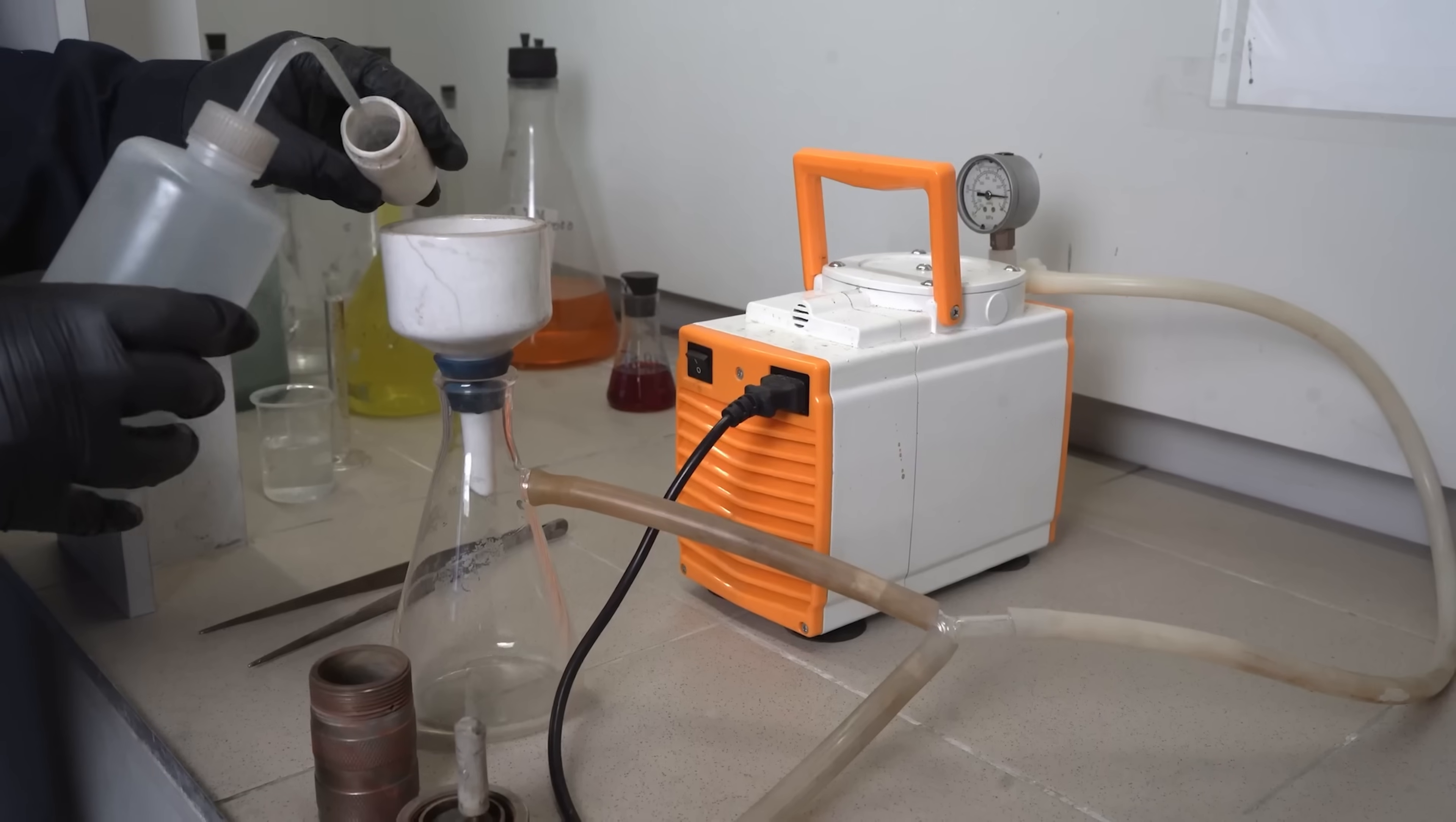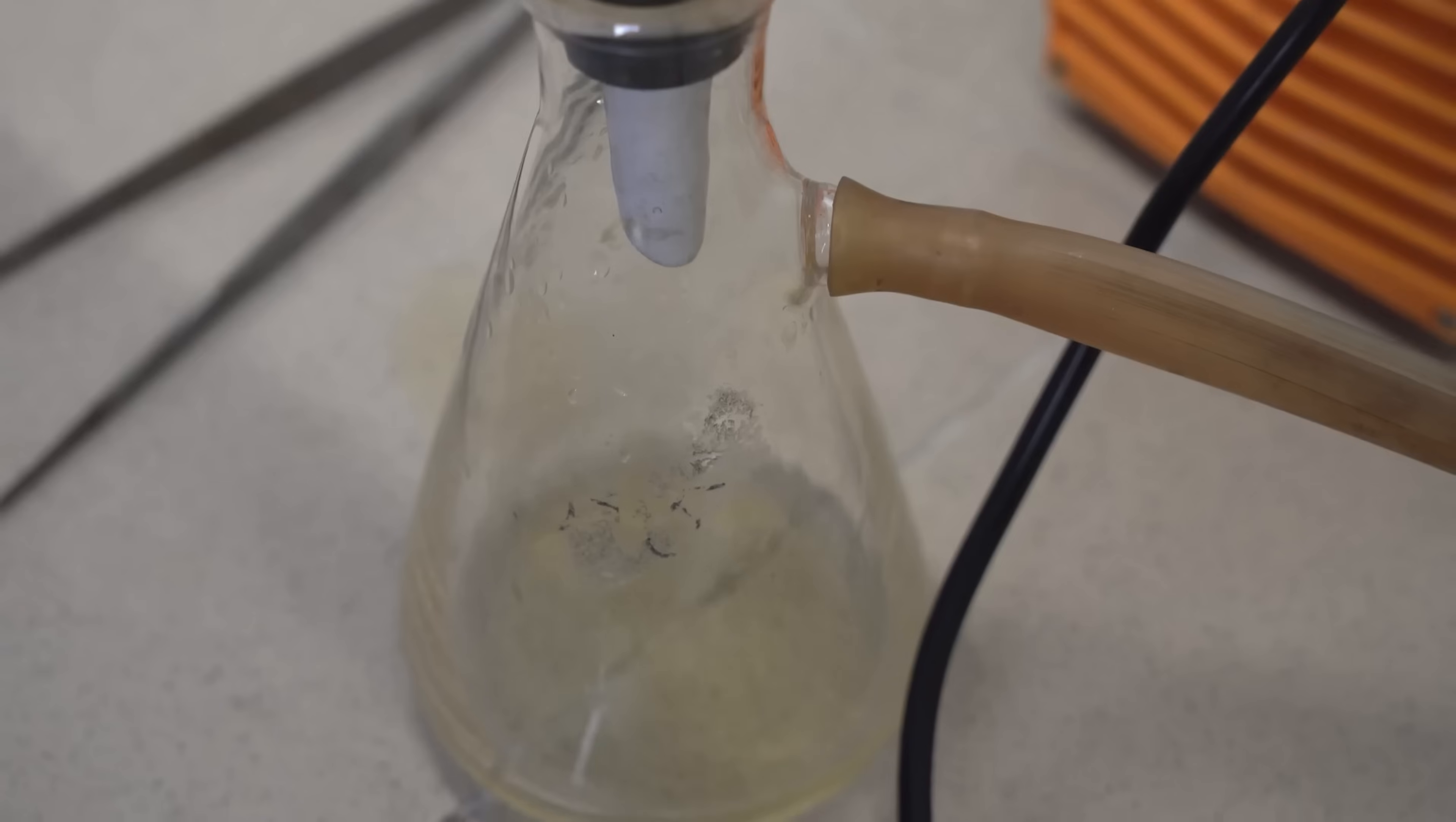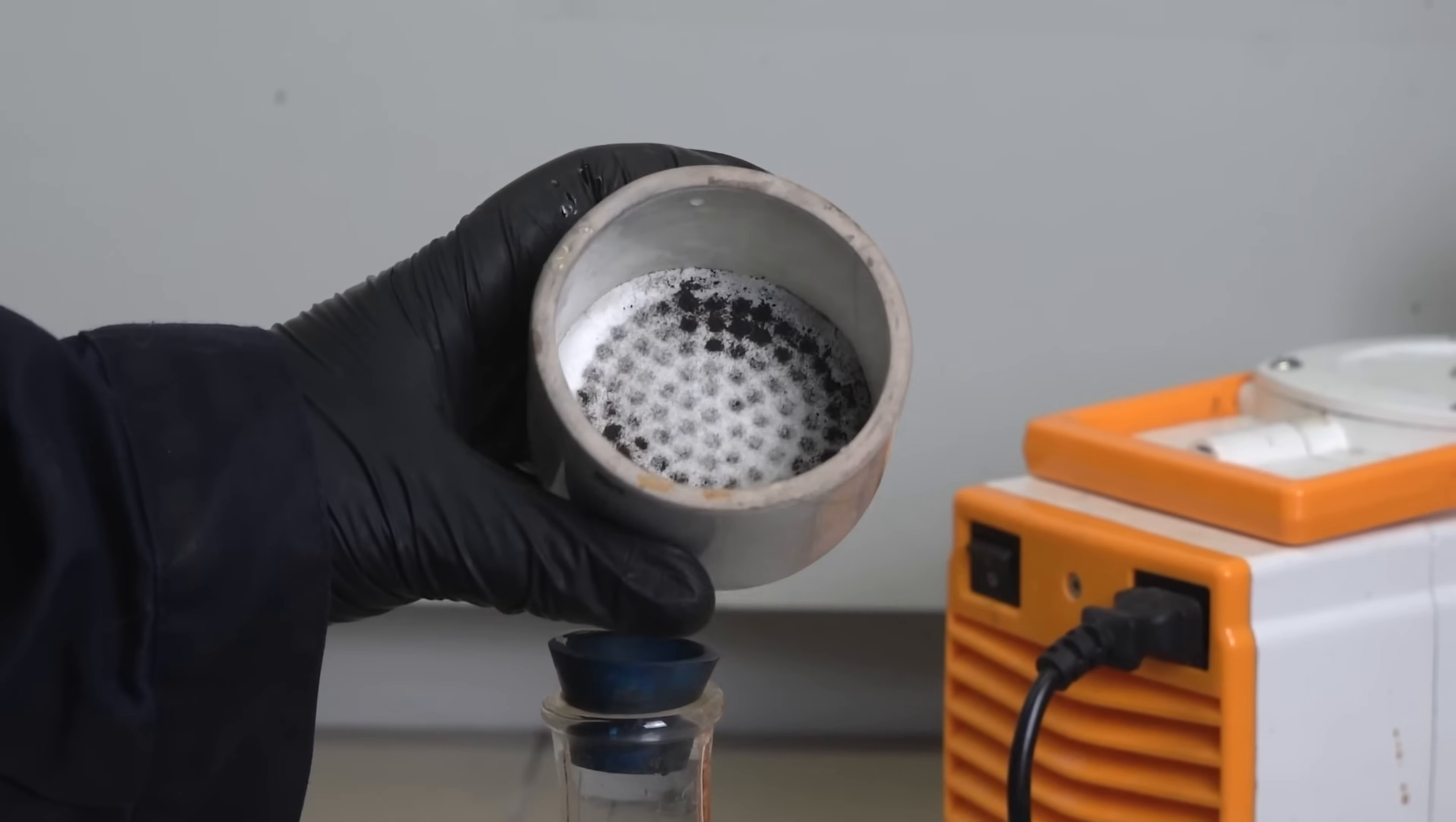After leaching, the solution is strained through a vacuum filter, the impurities insoluble in the acid are retained, and the so-called mother liquor flows to the bottom. One of the most important compounds of our time, titanium oxide, can be extracted from the precipitate collected on the filter.